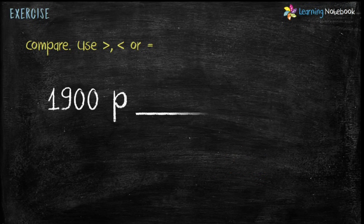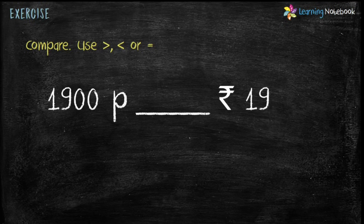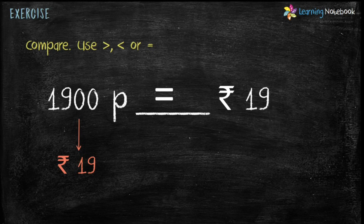Now compare 1,900 paise and Rupees 90. 1,900 paise would be converted as Rupees 19. Therefore, 1,900 paise is less than Rupees 90. Wait — actually 1,900 paise equals Rupees 19, so Rupees 19 is less than Rupees 90.